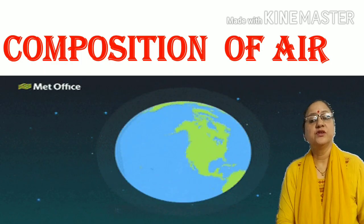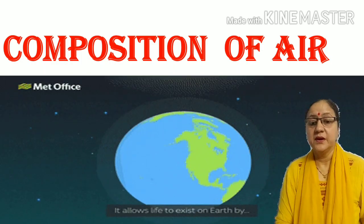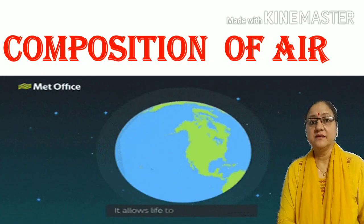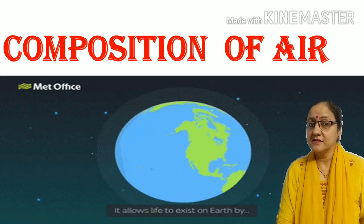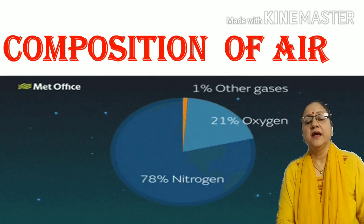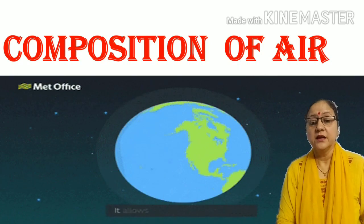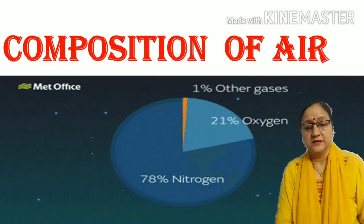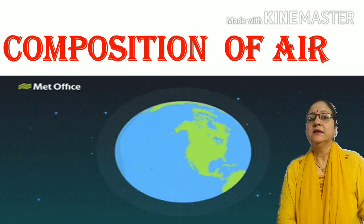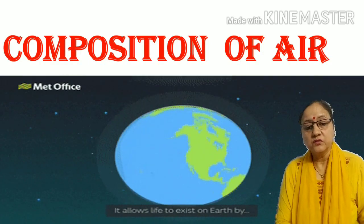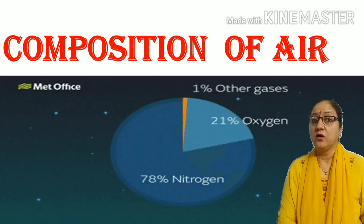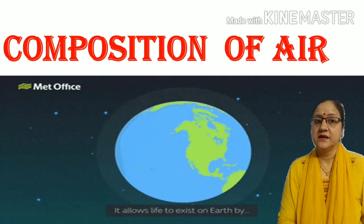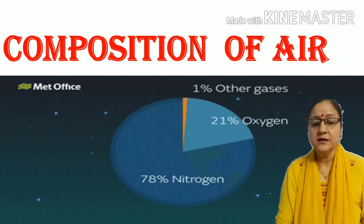Nitrogen is used by plants. But plants cannot take nitrogen directly. The bacteria present in the soil convert atmospheric nitrogen into a useful form for the plant. So plants take nitrogen from the soil. Oxygen is needed for living beings, and carbon dioxide is used by plants.